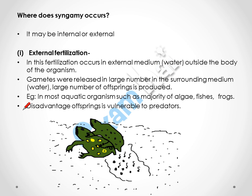Now, where does syngamy occur? Syngamy may be internal or external. In external fertilization, an external medium is required because this type of fertilization takes place outside the body of the organism.